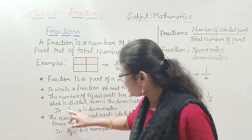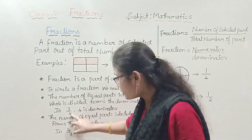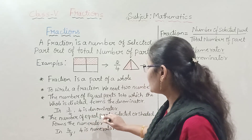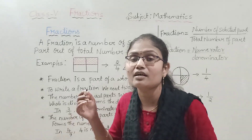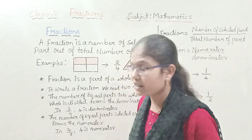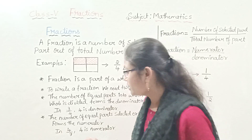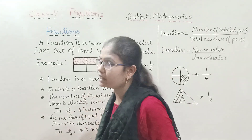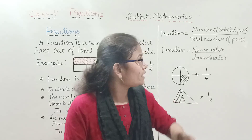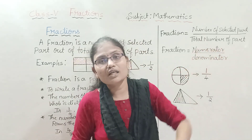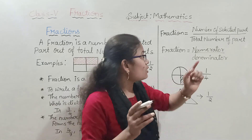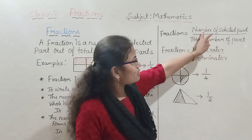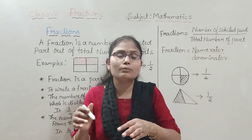In three by four (3/4), four is the denominator. The number of equal parts selected or shaded forms the numerator. In four by nine (4/9), four is the numerator. So, a fraction equals numerator divided by denominator, where the numerator represents the number of selected parts and the denominator represents the total number of parts.